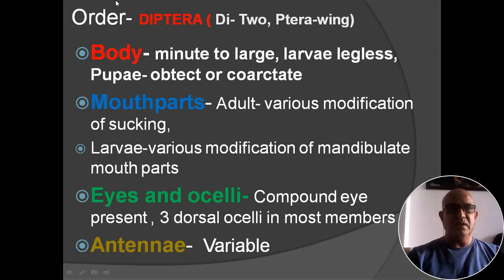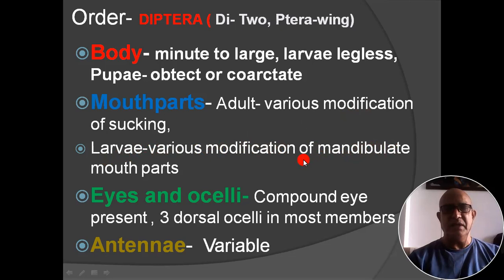The main characters of Diptera: body minute to large; larvae are legless; pupa is either obtect or coarctate type; mouthparts of adults have various sucking-type modifications; larvae have medivalate type mouthparts; compound eyes and ocelli are present; 3 dorsal ocelli are found in almost all species.